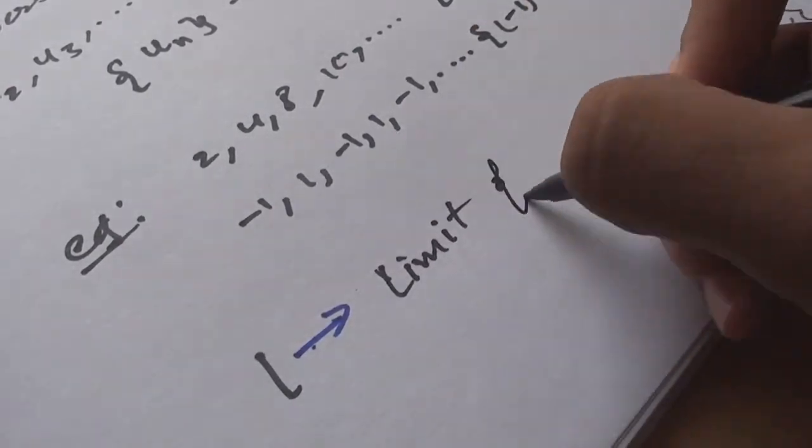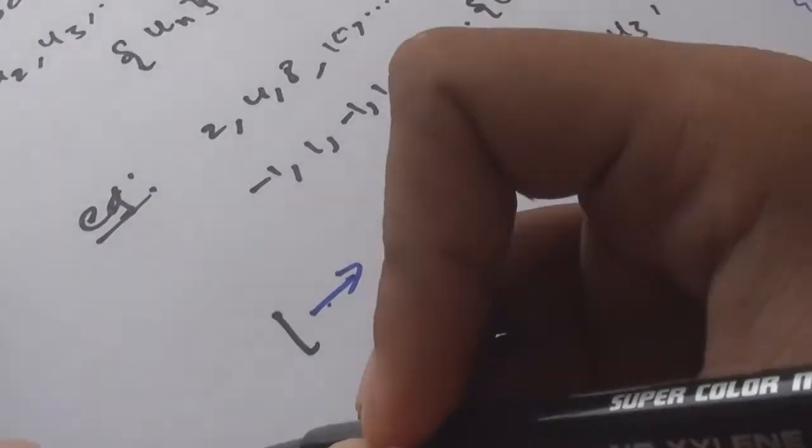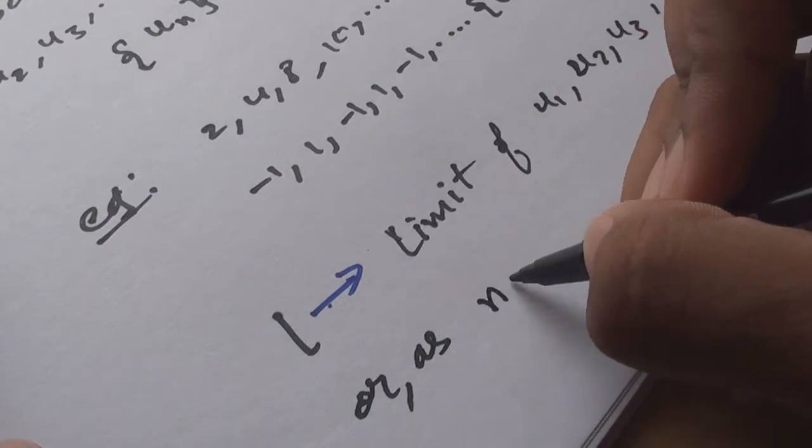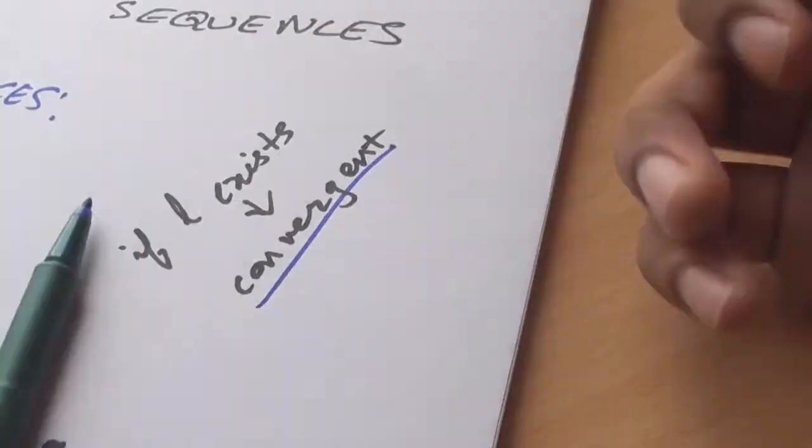A number l is called the limit of an infinite sequence u1, u2, u3... Or as n tends to infinity, the general term becomes l. If l exists in a sequence, then the sequence is called convergent. Otherwise, it's divergent or oscillating.